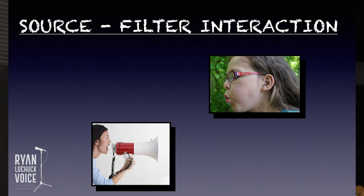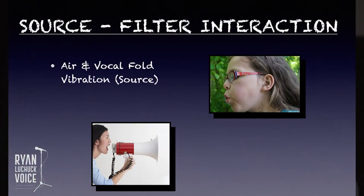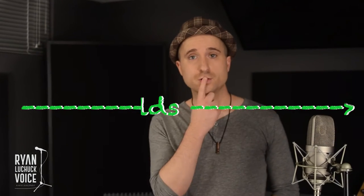How does your voice work? We have air and vocal fold vibration, and we're going to think of this as the source — your power source. We blow air and your vocal folds come together and are blown apart, opening and closing. This is the source of the sound. Then we have the filter, which is everything from your vocal folds to your lips — all that space the sound travels through before it reaches the listener's ear.